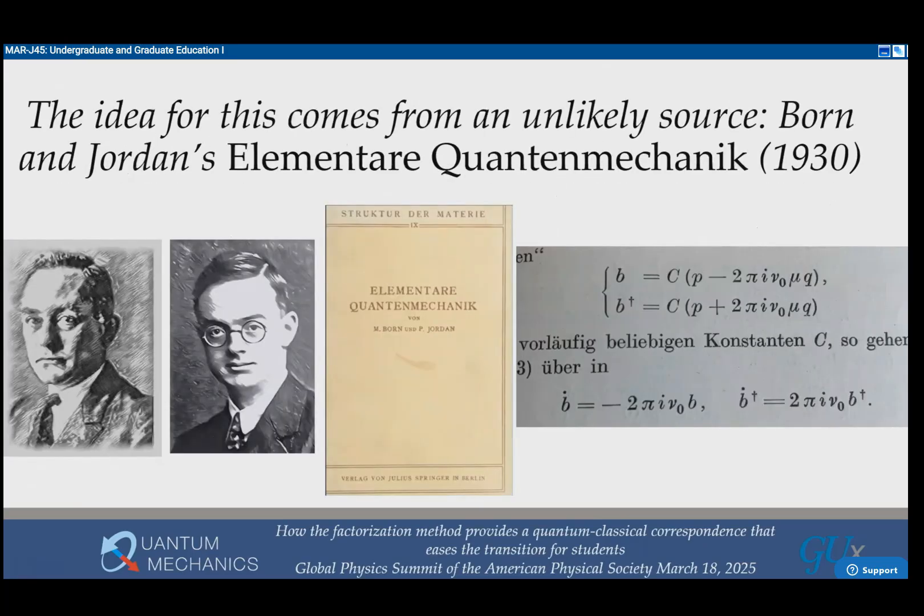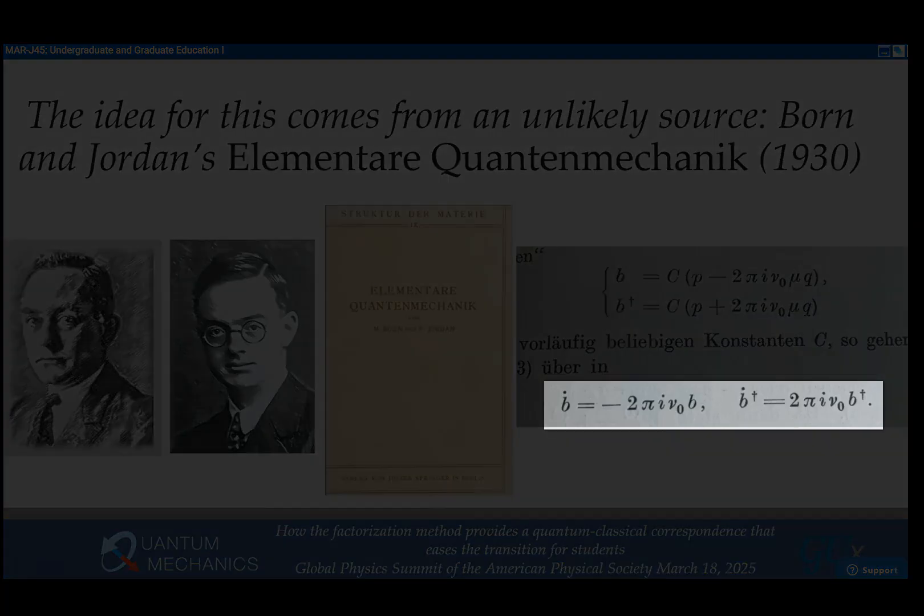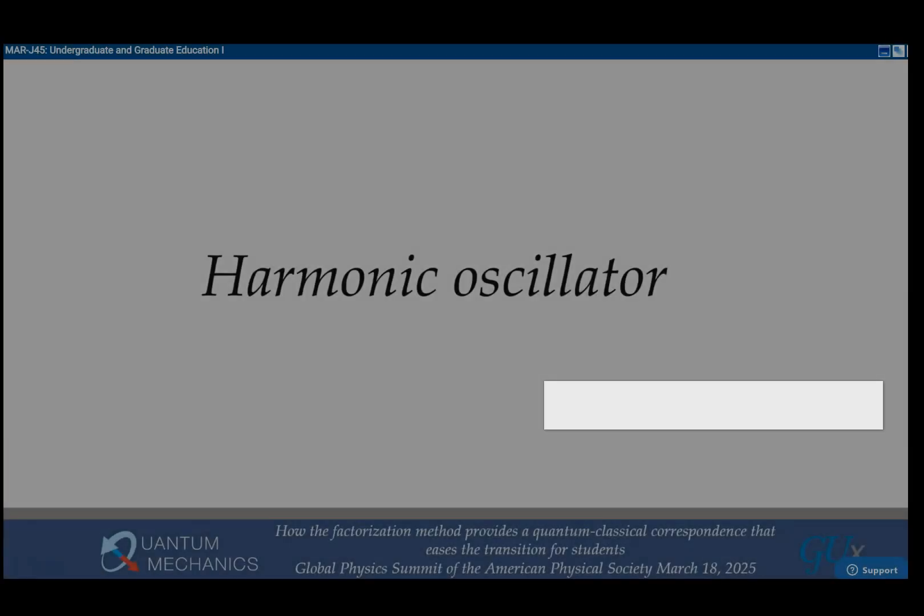The idea is actually very old. It comes from Born and Jordan's Elementara Quanten Mechanic, a book written in German in 1930, never translated. If you notice when they're talking about the harmonic oscillator, they have this equation: B dot is some number times B and B dot dagger is some other number times B dagger. These two numbers are complex conjugates of each other.